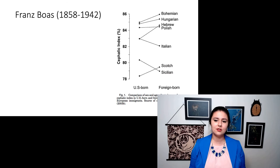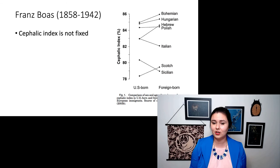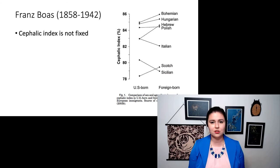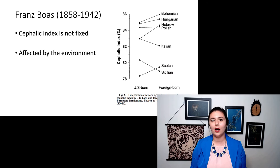However, Franz Boas in the early 1900s, he came along and he showed that the cephalic index isn't fixed. So he's looking at people who are born in the US versus recent immigrants and he's showing that there isn't any relationship between these two different groups of people and that it's changing between them. And that this shows the cephalic index is affected by the environment, not by your ancestry or what race you are.